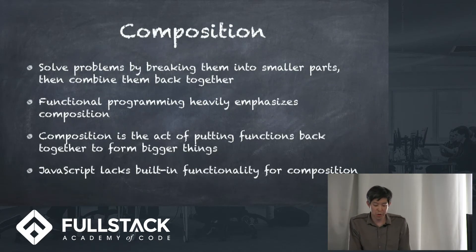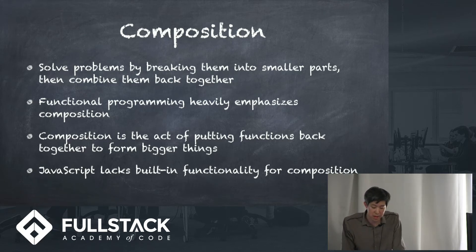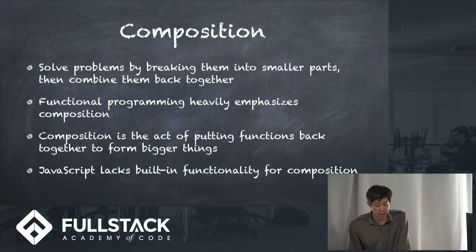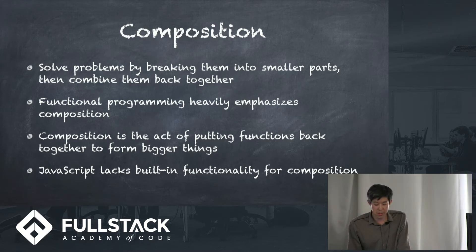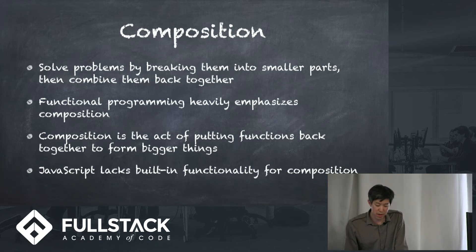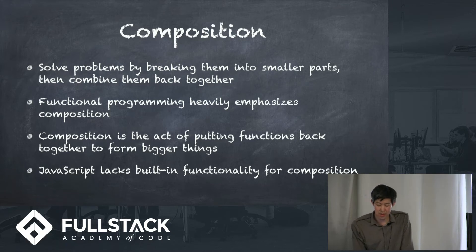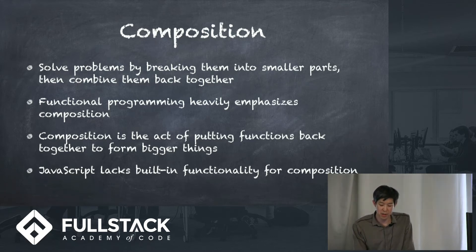In programming, we solve problems by breaking them into smaller parts, and then putting those smaller parts back together somehow to construct the whole solution. The same is largely true in functional programming. We break problems down into smaller problems, solve them, and put them back together to solve the large one. Because of this, most of the emphasis in functional programming is in composition.